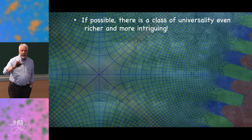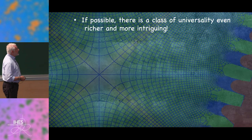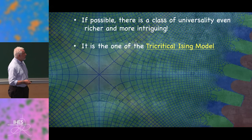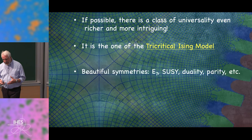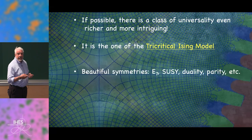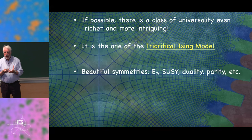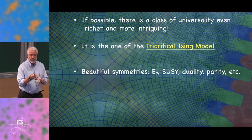This was just an appetizer. There is a class of universality even richer and more intriguing than what I just presented: the tricritical Ising model. This model is the place where beautiful symmetries emerge at the same time — we have E7 instead of E8, we have supersymmetry, we have duality, we have parity, et cetera.